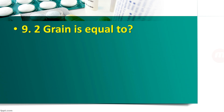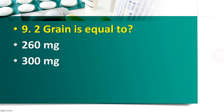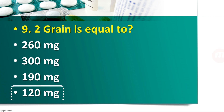Question number 9: 2 grains is equal to — 260 mg, 300 mg, 190 mg, or 120 mg? The right answer is 120 mg. 1 grain is equal to 60 mg, so 2 grains is equal to 120 mg. These dispensing pharmacy MCQs are always easy — you just have to remember the conversions, and you can solve the questions very fast.